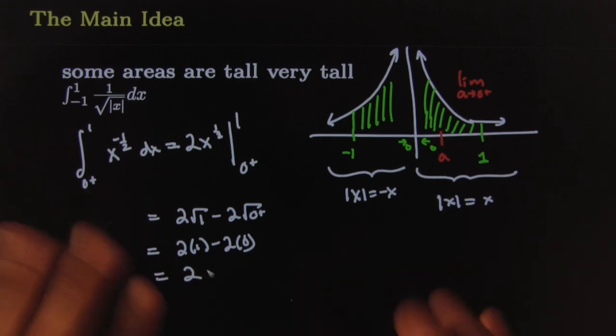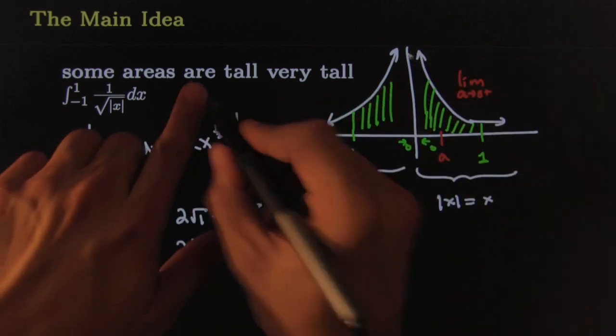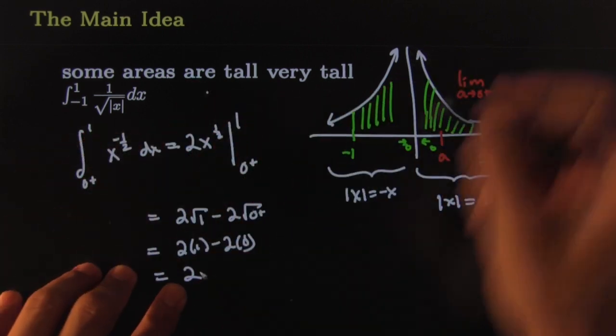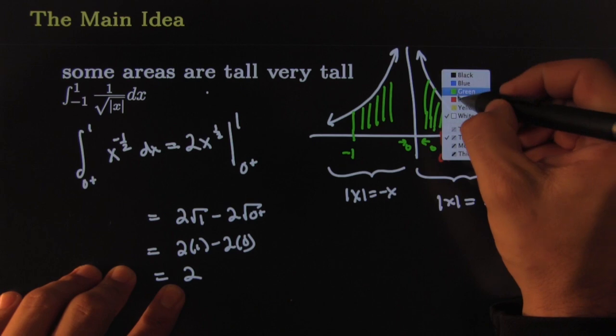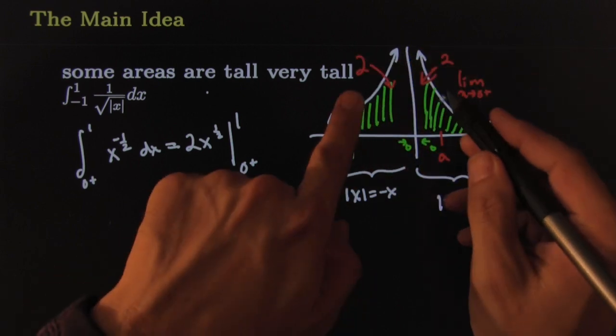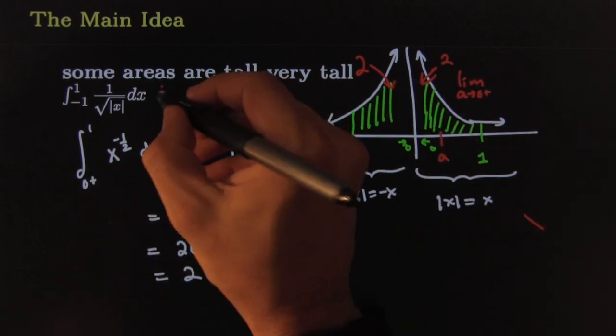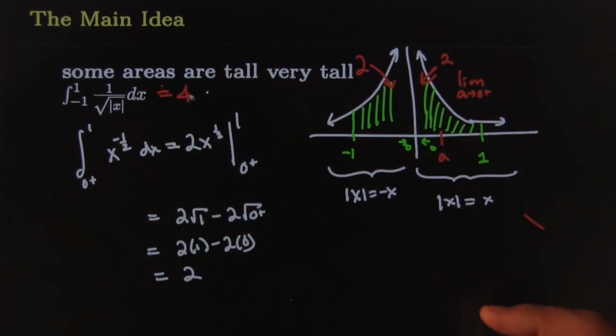Yippee-ki-yay! Look what happened here. Sometimes tall areas that are really really really tall are finite. This area turned out to be, of course, 2. And so I'm guessing that this area would be 2 as well. So we would have a total of 4 in this entire area. This integral becomes equal to 4. See why they pay me? Easy does it.